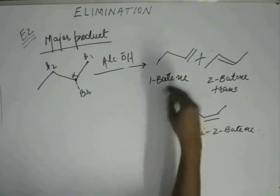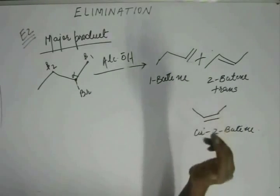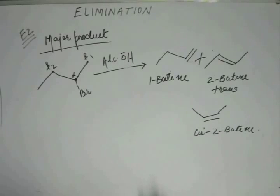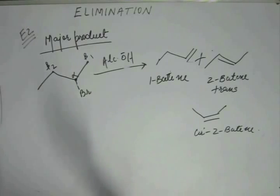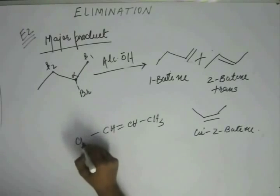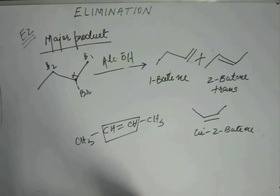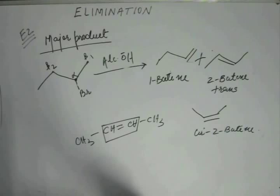To identify the major product, we judge which product is the most stable. Now, 2-butene — whether trans or cis — is more stable than 1-butene. The reason is that in 2-butene, the alkene has more hyperconjugation. In 2-butene, there are methyl groups on both sides of the alkene, giving 6 alpha-hydrogens to the alkene, so hyperconjugation is higher than in 1-butene.